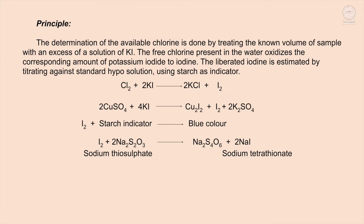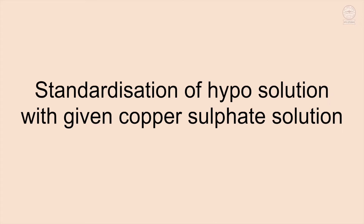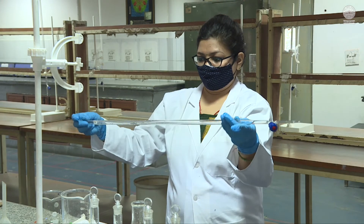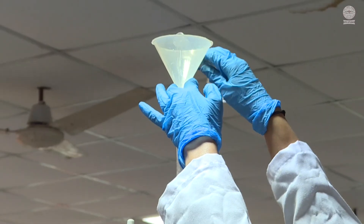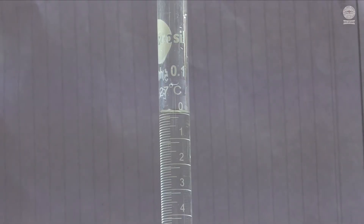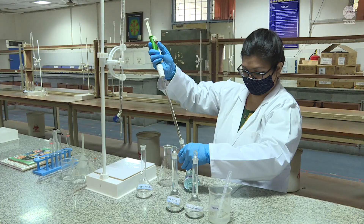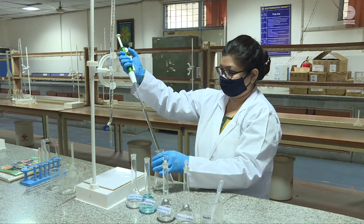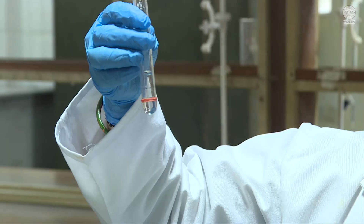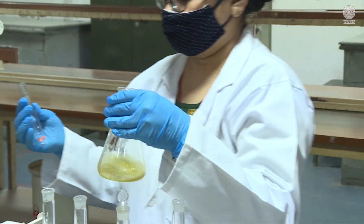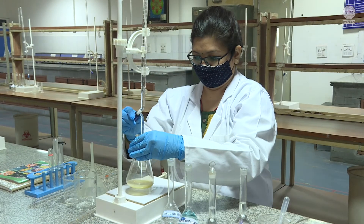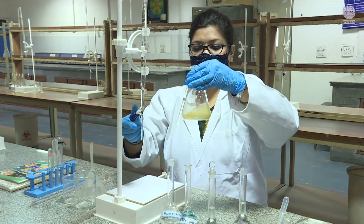Procedure Part 1 – Standardization of hypo solution with given copper sulphate solution: Rinse the burette with hypo solution and fill with hypo solution up to the zero mark. Take 10 ml of the given copper sulphate solution by pipette into a conical flask. Add 1 ml of potassium iodide solution and titrate with the hypo solution until a faint yellow color develops.